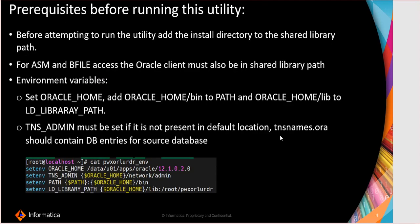Pre-requisites before running this utility include: we need to add the install directory to the shared library path. For ASM and B-file access, the Oracle client must also be in the shared library path. Environment variables should be set like Oracle Home, Oracle Home bin to PATH, and Oracle Home lib to LD_LIBRARY_PATH.